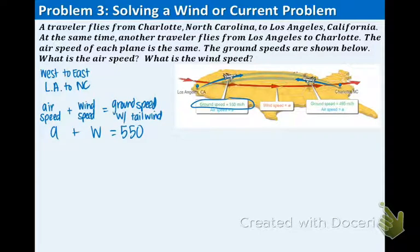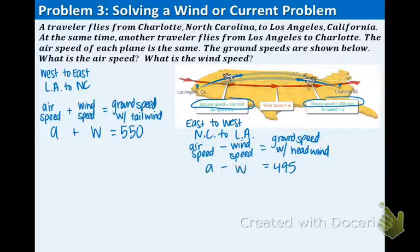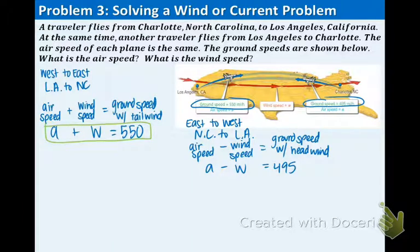Now let's talk about the opposite direction. We're going to go east to west. That means we're going North Carolina to LA. And that also means when we're going the opposite direction, the air speed and the wind speed are not combining. The wind speed is actually taking away from the air speed. And that's going to give us the ground speed with the headwind. Remember, headwind just means that the winds are working against the plane instead of with the plane. And it told us right here, the ground speed going the opposite direction is 495. And we're still using our A and W, but this time it's subtracting. So here's our two equations. We have A plus W equals 550 and A minus W equals 495.